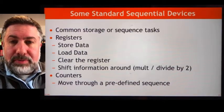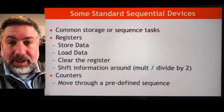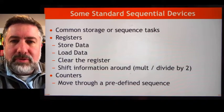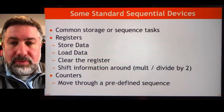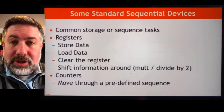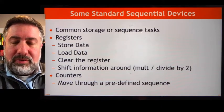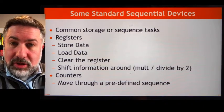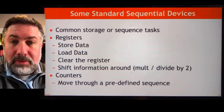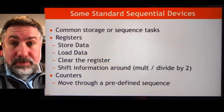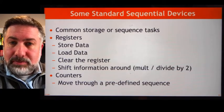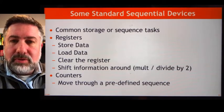Now that we have a good idea of how to build sequential devices, we can build out a couple of standard sequential devices that we will use when we build our data path. This is just like in the combinational logic section where we built standard devices like multiplexers and decoders. Here we're going to build registers and counters — both standard devices we'll use in our data path.